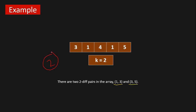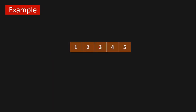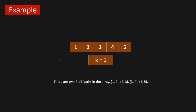So for this input we have to return two because we have two k-diff pairs in this array. If you are given this array and k equals to one, then you have to return four because we have four k-diff pairs: (1,2), (2,3), (3,4), and (4,5).